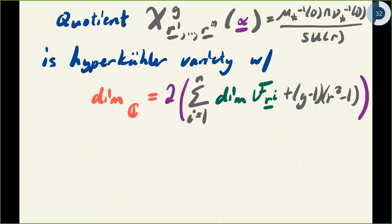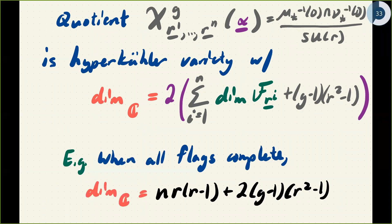I'll call this quotient X with various symbols to remember all the choices we've made. It's the intersection of level sets modded out, giving a hyperkähler variety whose dimension is related to the dimension of the partial flag varieties and the matrices added at the center. When all the flags are complete, the case people are typically most interested in, the dimension takes a particularly nice form.